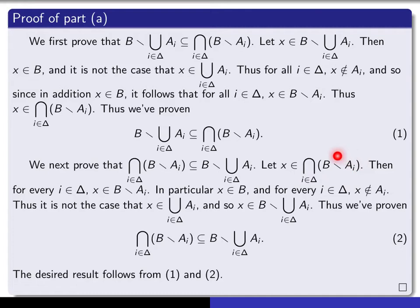Conversely, if we take an x in the right-hand side — the intersection — that means for every i in the indexing set, x is in B minus a sub i. In particular, that says that x is in B, and for every i, x is not in a sub i. If for every i, x is not in a sub i, that means it's not the case that x is in the union of all of the sets, because that's exactly the negation of the statement that x is in the union. So now we have x is in B and x is not in the union, and therefore x must be in the set theoretic difference. That proves this inclusion, and from both inclusions we deduce that the two sets are equal.